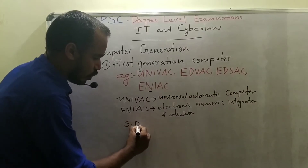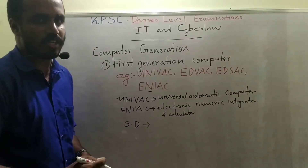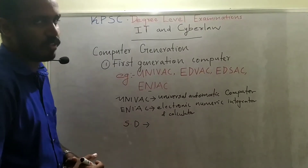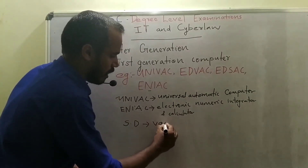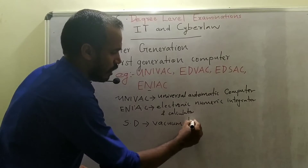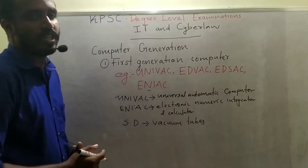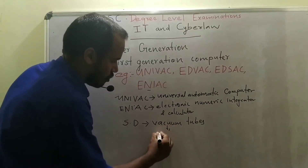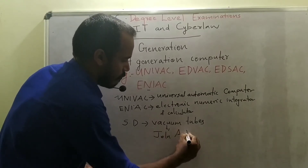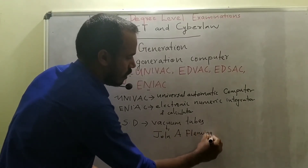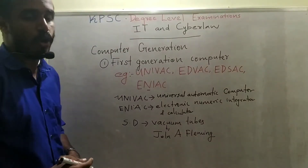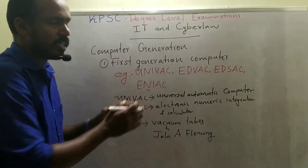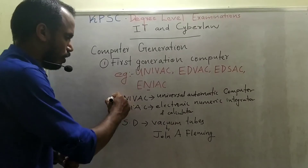In the first generation of computers, vacuum tubes were used as switching devices. Vacuum tubes were invented by John A. Fleming and are the defining technology of first generation computers.